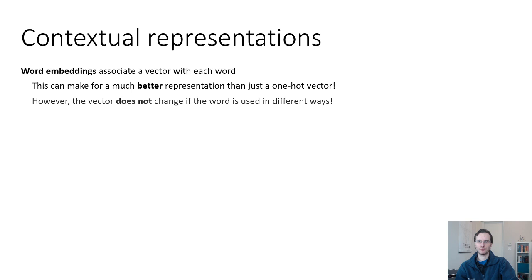Word embeddings associate a vector with each word in the dictionary. This can make for a much better representation than a one-hot vector, but the vector does not change if the word is used in different ways.